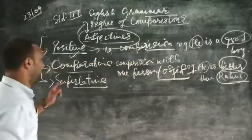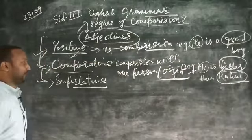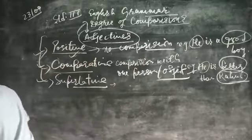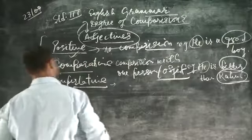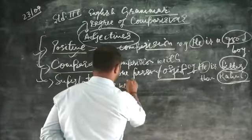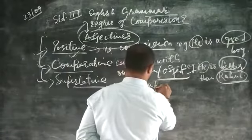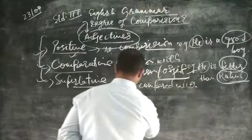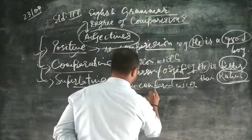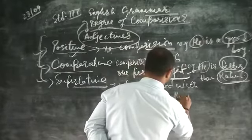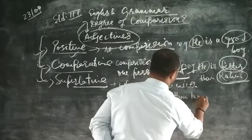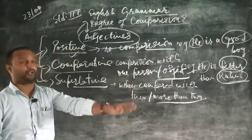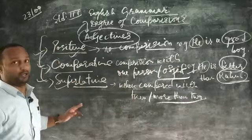Now come to the third part of this degree of comparison. That is superlative. That is when compared with two or more than two. That form of adjectives will be superlative.